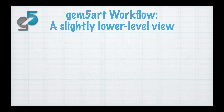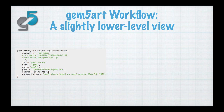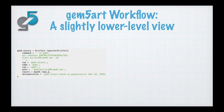To give a slightly lower-level view, a GEM5 user would interact with GEM5 Art via Python, and it really comes in two parts. The first is registering these artifacts, which is done via the register artifact function. In this example, the user is registering a GEM5 binary. There's the command for building the GEM5 binary, where it exists on the local file system, documentation, and also inputs. Inputs are simply the dependencies needed for that artifact. So in this example, the GEM5 repo is needed for the GEM5 binary, as a GEM5 binary is built from the GEM5 source code.